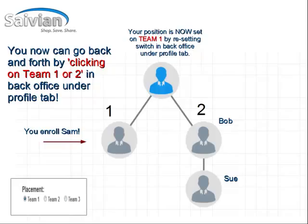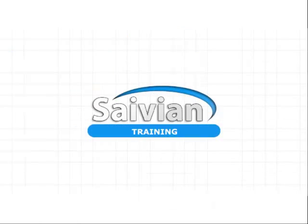You can also click manually on the tree by clicking the blue link on the open position. That will manually place people in that leg if you want to manually place people in your organization. Thank you for watching this short video on placement in the Savion compensation plan.